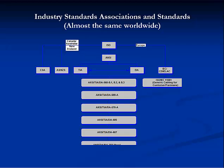Here are the primary telecommunications standards organizations you should know. First, ISO, or the International Standards Organization, located in Geneva, Switzerland, is responsible for bringing together a worldwide approach to developing telecommunications standards. Here in the United States, TIA, or the Telecommunication Industry Association, writes the American standards, and ANSI, the American National Standards Institute, publishes them. Other important associations include EIA, the Electronic Industry Alliance, CSA, the Canadian Standards Association, and several other associations in Europe, Australia, and New Zealand.